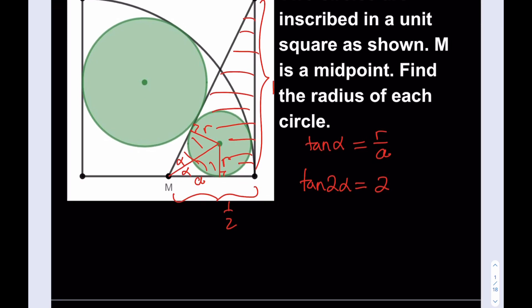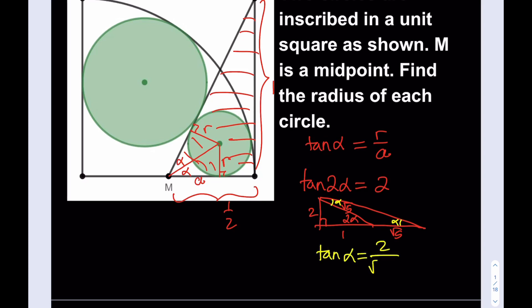There are a couple of ways to find tangent alpha. My favorite method is to draw a right triangle with 2-alpha here — not drawn to scale. The hypotenuse will be root 5. If you extend this base to root 5 and connect here, you get an isosceles triangle. These angles have to be alpha and alpha, so we can cut 2-alpha in half. Tangent alpha is going to be 2 over root 5 plus 1.